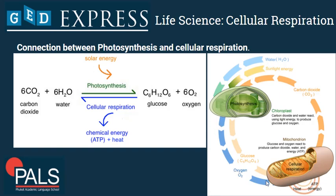Oxygen is produced as a by-product. Both of these — glucose and oxygen — can be used for cellular respiration in mitochondria, which will then produce ATP energy. And our simple molecules, carbon dioxide and water, are produced again, and the cycle can repeat.